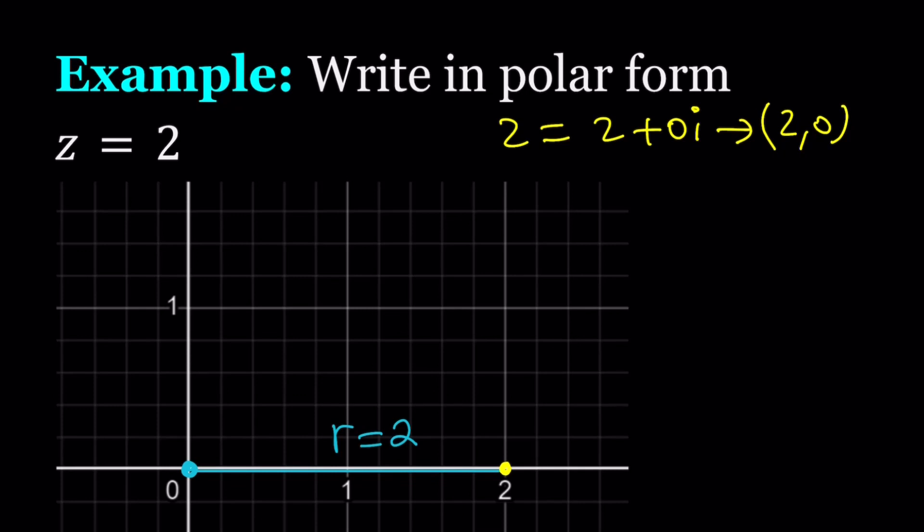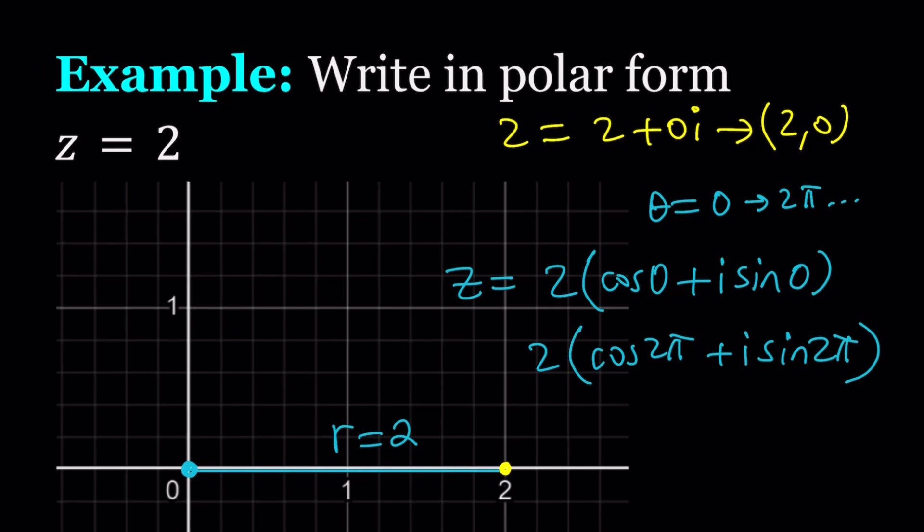Well, there seems to be no angle, so theta is going to be 0 radians. But you can also write it as 2 pi, 4 pi, so on and so forth. We'll talk about that later. There are infinitely many values for theta, but the principal value is just going to be 0 radians. So we can write 2 as 2 times cosine 0 plus i sine 0. Or if you want, you can write it as 2 times cosine 2 pi plus i sine 2 pi. And if you want, you can even write it as multiples of 2 pi, which is 2 pi times n.